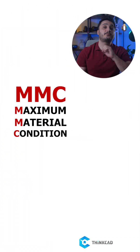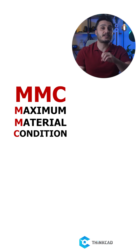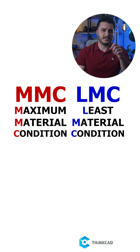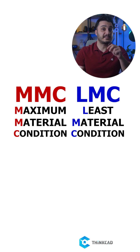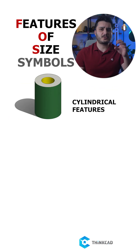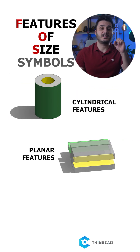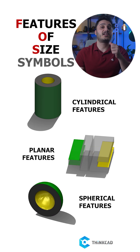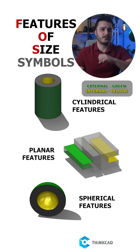Two very important GD&T concepts: MMC, or maximum material condition, which is the state where you get the maximum amount of material, and LMC, or least material condition, which is the state where you get the least amount of material. These are features of size symbols, which in simple terms means they can be applied to cylindrical, planar, and spherical features. These features can be external or internal.